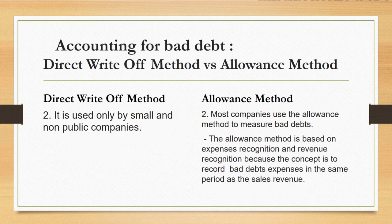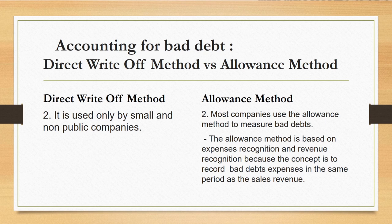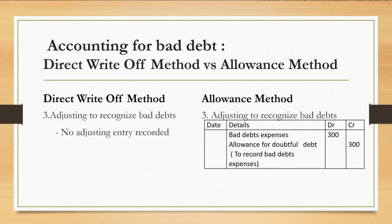Under the direct write-off method, it is used only by small and non-public companies. But under the allowance method, most companies use it to measure bad debts. The allowance method is based on expense recognition and revenue recognition — the concept of recording bad debts expense in the same period as the sales revenue. Under the direct write-off method, there is no adjusting entry, but under the allowance method, there is an adjusting entry: debit bad debts, and credit allowance for doubtful debts.